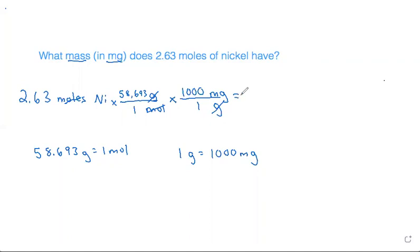So then we take these numbers multiplying by the numbers on the top and dividing by the numbers on the bottom. I get 2.63 times 58.693 times a thousand gives me 154,362.59 milligrams of nickel.